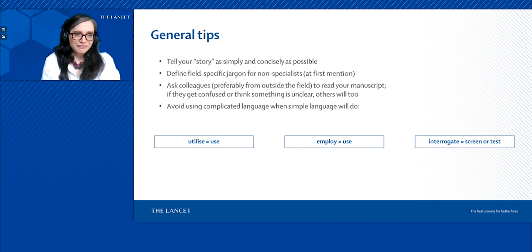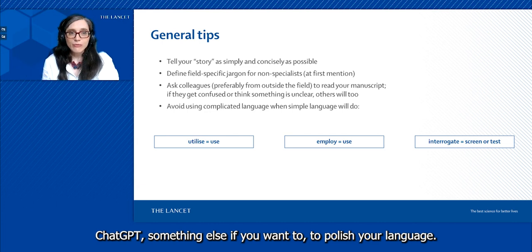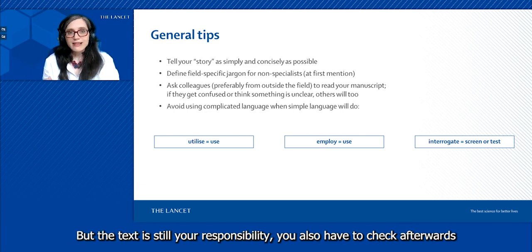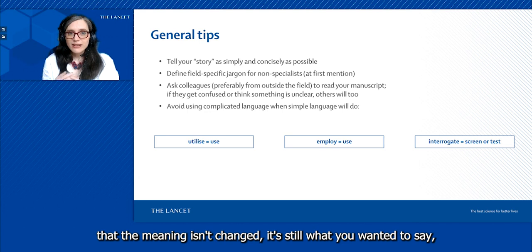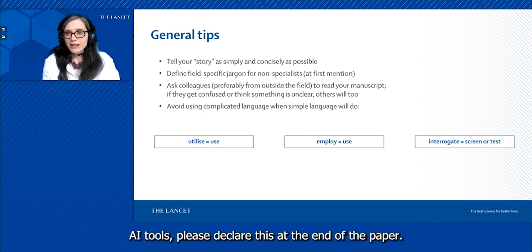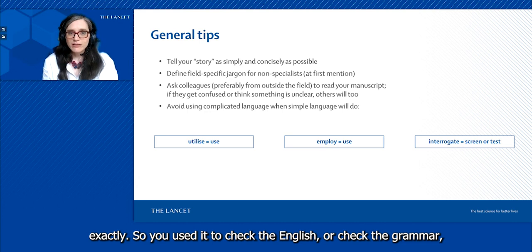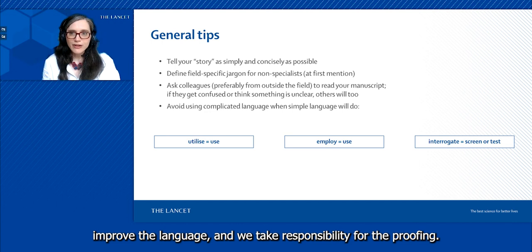Try to avoid using complicated language when simple language would do as well. Instead of saying utilize, just say use. Instead of employ, also say use. Interrogate—you can say screen or test. Something else: instead of using passive language like the test was done, say we tested patients for XYZ. One thing about the writing style—you can use AI tools such as ChatGPT or something else if you want to polish your language, but the text is still your responsibility. You have to check afterwards that the meaning isn't changed, it's still what you wanted to say, everything is accurate, no mistakes were introduced. If you do use AI tools, please declare this at the end of the paper.